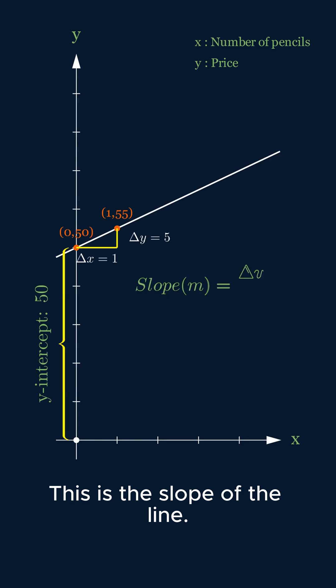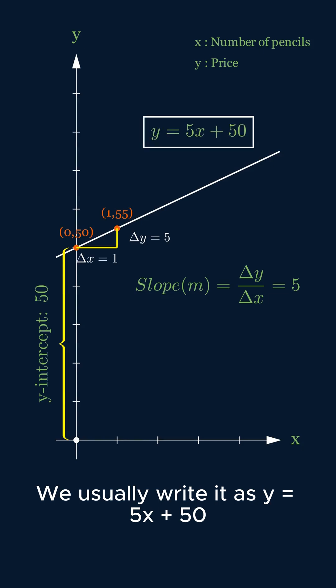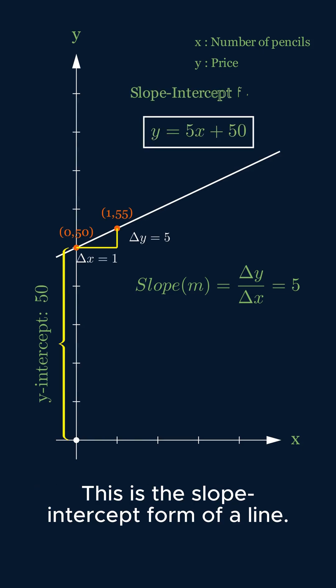If you buy x pencils with the box, total cost is 50 plus 5x, which is usually written as 5x plus 50, which is the slope-intercept form.